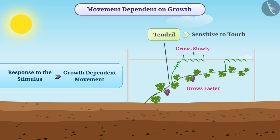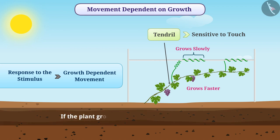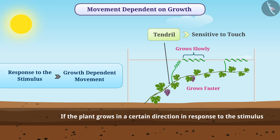Here, the plant grows in one direction in response to the stimulus. If the plant grows in a certain direction in response to the stimulus, then such movement is called tropism.